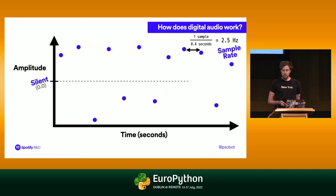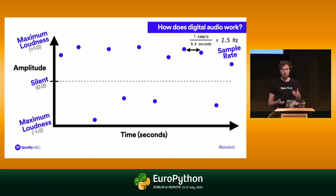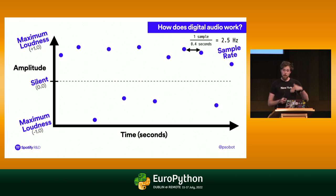You notice this graph is a little bit odd — it's got points at the top and the bottom. That's because silence is not at the bottom of the graph; it's actually in the middle. Both the top and bottom of the graph are maximum loudness — positive direction at the top and negative direction at the bottom. This is because sound is a wave, and it vibrates back and forth. If it goes back and forth a very small amount, it'll stay towards the middle of the graph. If it goes back and forth a lot, it'll hit the extremes. So maximum loudness is the top and the bottom of the graph.